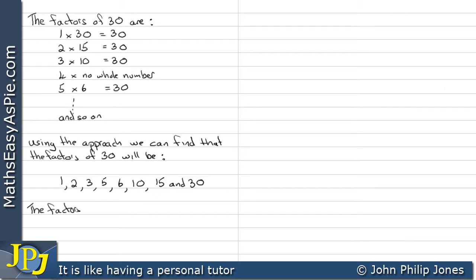Now using the same approach, the factors of 40 are 1, 2, 4, 5, 8, 10, 20, and 40.